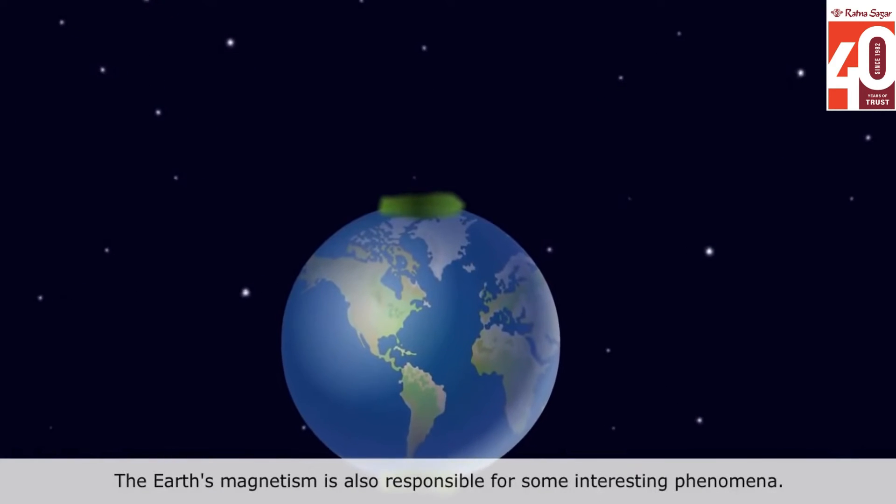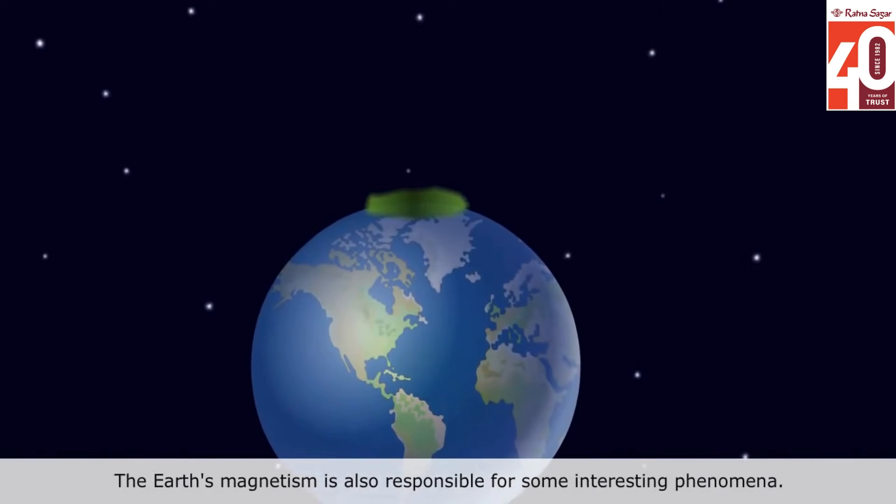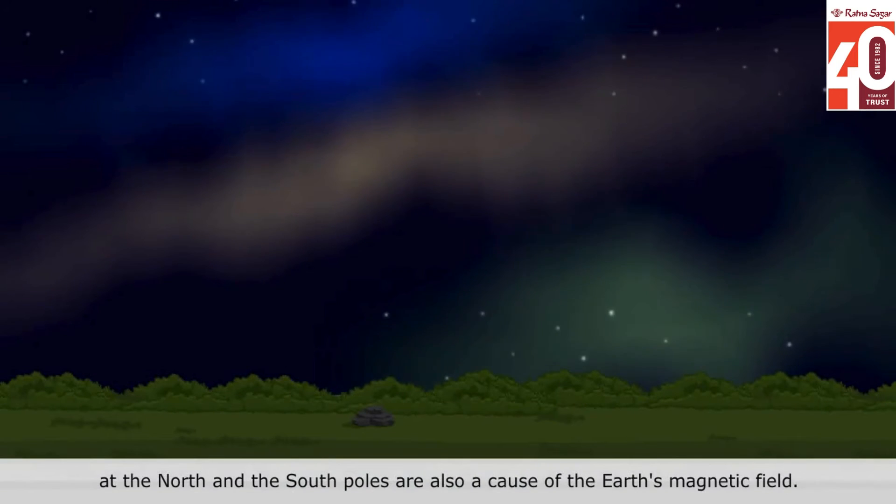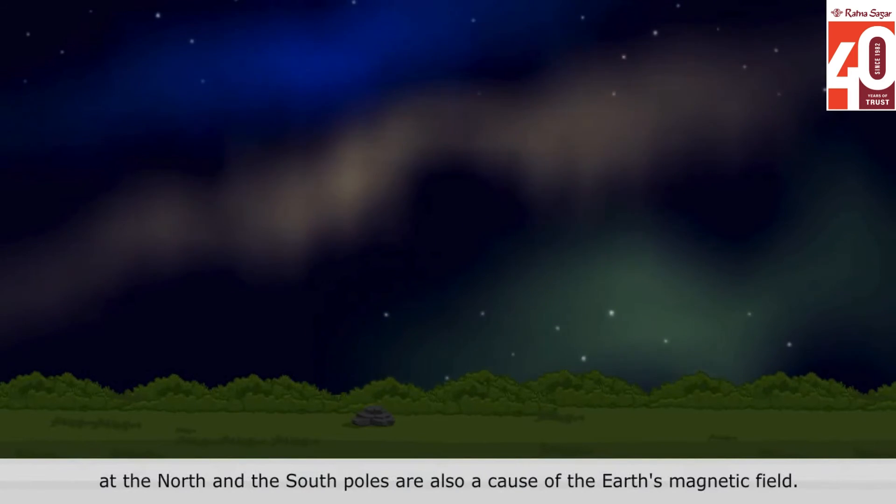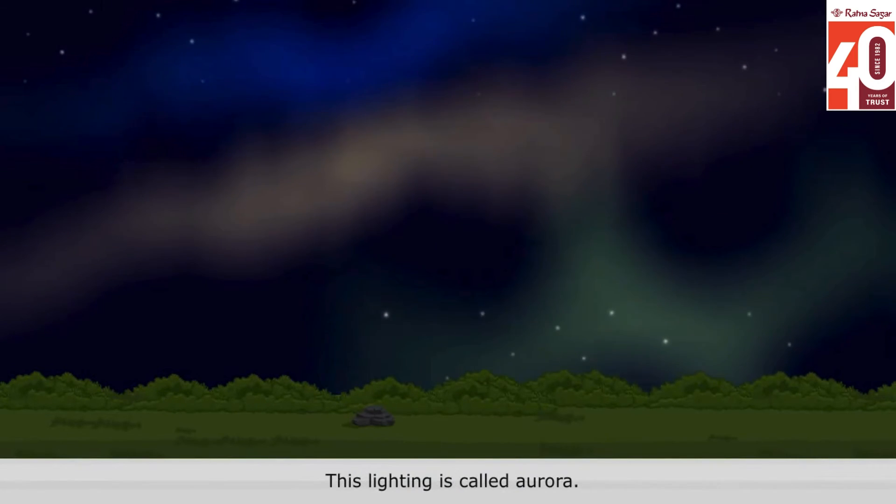The Earth's magnetism is also responsible for some interesting phenomena. The incredible natural light display at the North and the South poles are also a cause of the Earth's magnetic field. This lighting is called Aurora.